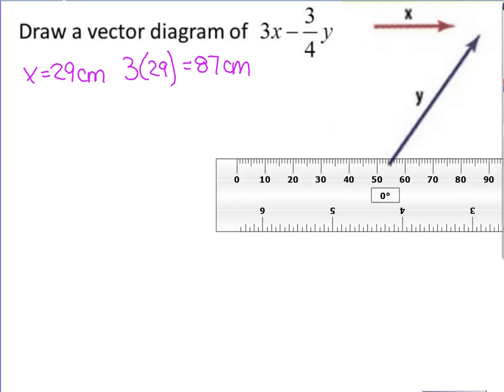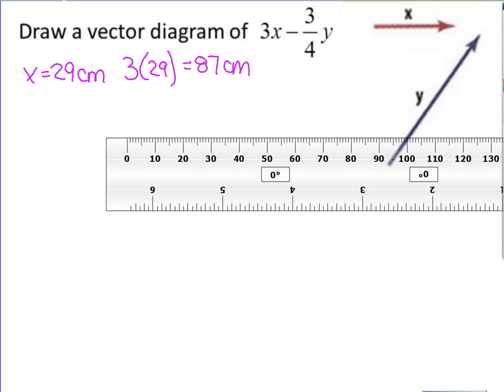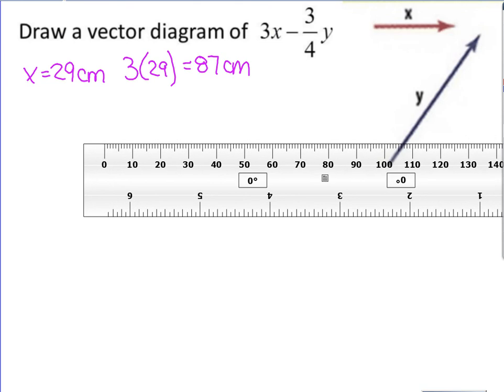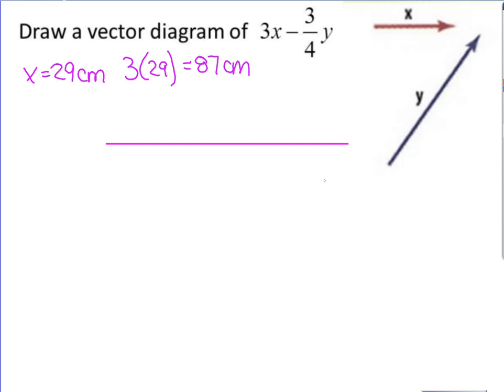So the first thing we want to do is we want to draw 3x. We'll start at 0 and go over to 87 centimeters. This will be the vector that is represented by 3x.